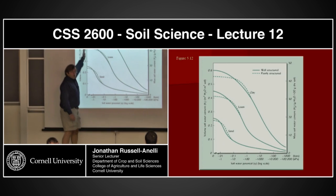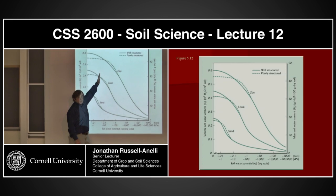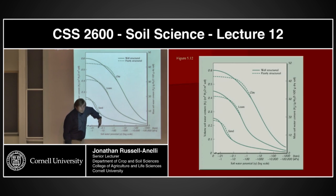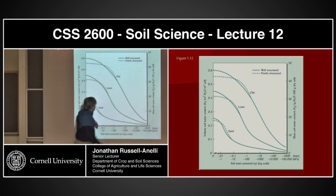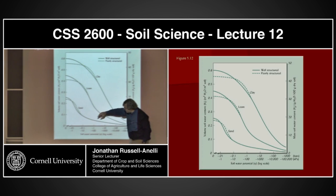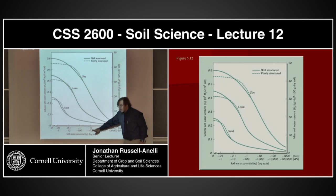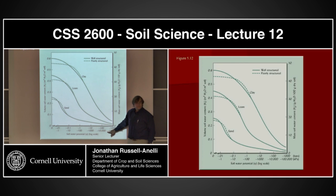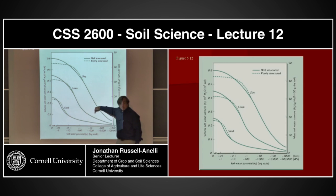As the water content comes out of these soils, the water is being held tighter and tighter by the soil. So as theta starts coming down — as you move farther this way — the negative pressure becomes more and more. So our soils are drying, and the water is being held tighter.